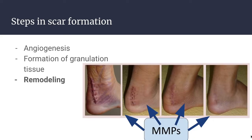Finally, remodeling of the connective tissue. The outcome of the repair process is influenced by the balance between synthesis and degradation of ECM proteins. After its deposition, the connective tissue in the scar continues to be modified and remodeled. The degradation of collagens and other ECM components is accomplished by a family of matrix metalloproteinases, or MMPs. During scar formation, these MMPs are activated to remodel the deposited ECM, and then their activity is shut down by nearby tissue inhibitors.